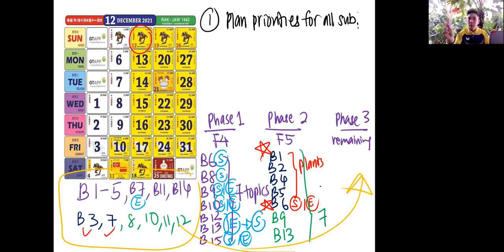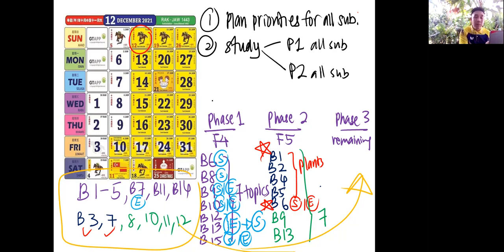I am very good in a sense I help you to even consider that you have other subjects. So don't study topically, it's not the way anymore. What you should do is: number one, plan your priorities for all your subjects. Phase one, phase two, phase three. Number two, study this way. You study phase one all the subjects, except your languages and then moral and pendidikan Islam. Basically your three sciences, your addmath, sejarah. Phase one, you focus on phase one first for all the subjects. Then you study phase two for all the subjects. You settle all the phase one for all the subjects, then only you study phase two.